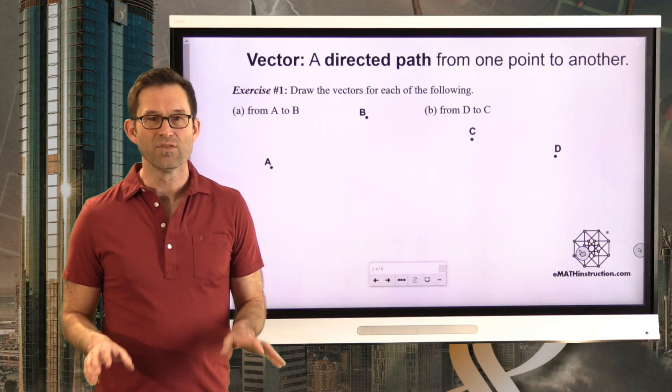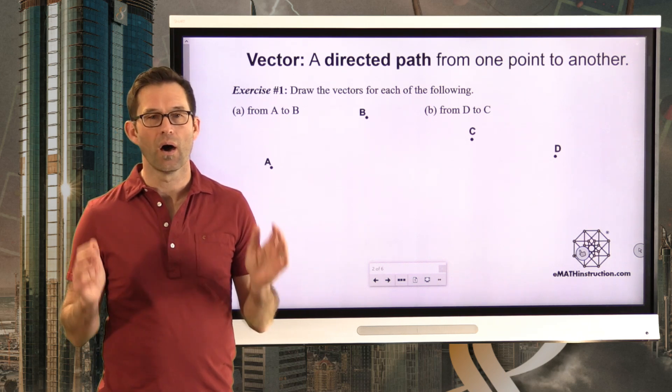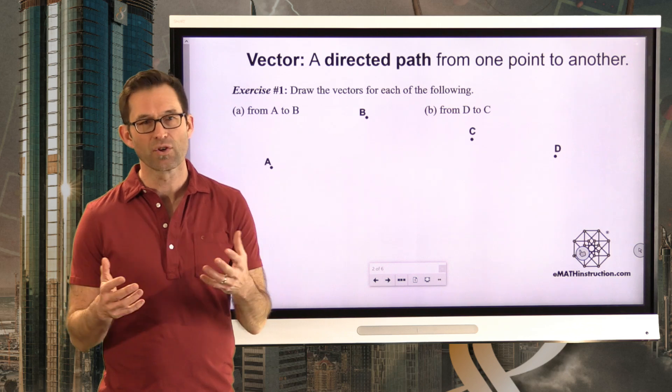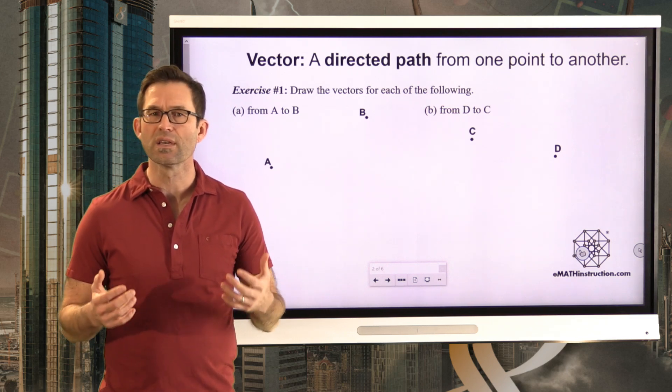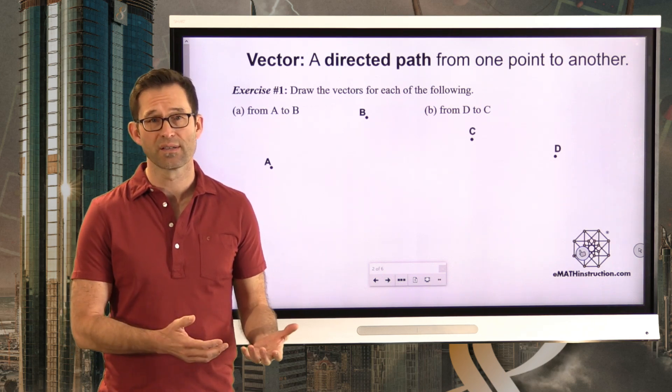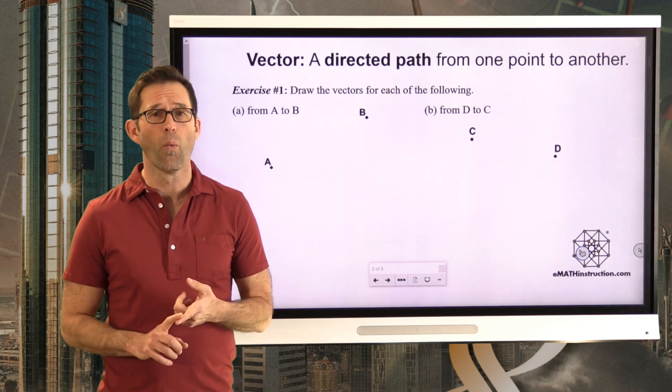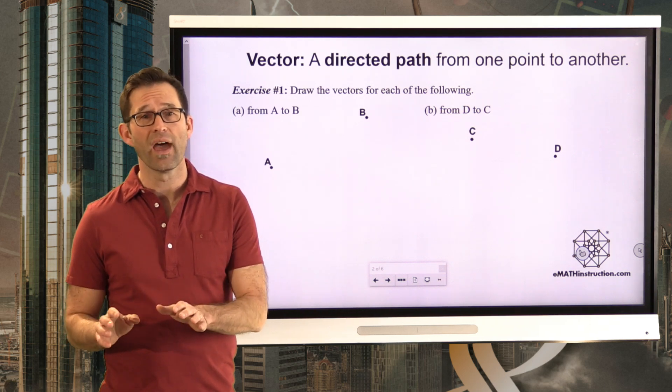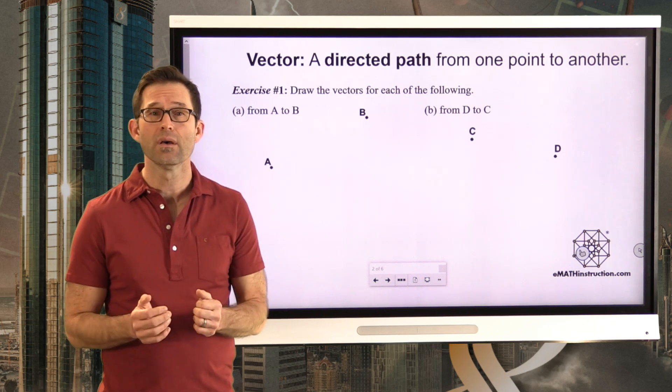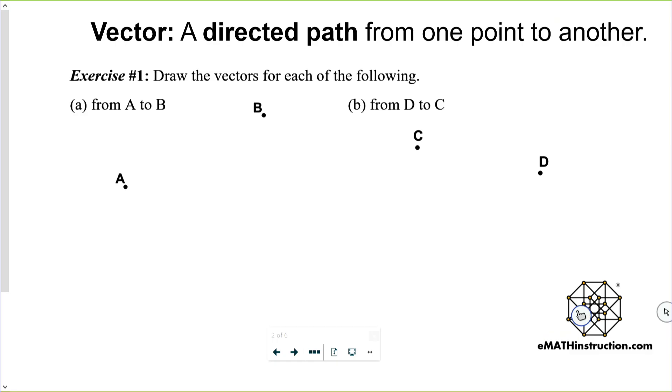Before we can really get into how to do a translation, we have to introduce something called a vector. Vectors come up a ton in mathematics. I think they even come up in some Despicable Me movies. But vectors are different things in different places of math and different areas of physics. We're going to talk about one type of vector in this context in math, but there are other types out there. Specifically, all we're thinking about a vector is it's a directed path from one point to another. It looks a lot like what you'd get if you mixed a ray with a segment. So it's got a direction like a ray has, but it's got a length like a segment has. Exercise number one just asks us to draw the vectors for each of the following.